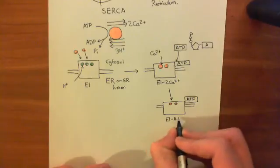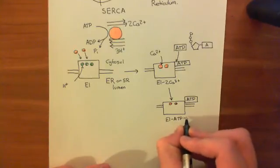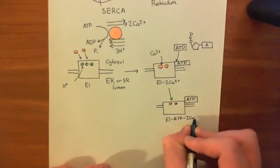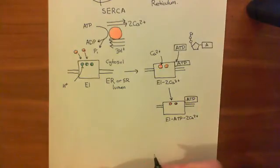And this is now called E1-ATP-2Ca2+. ATP is considered more important than the calcium, so it comes first. This is called the E1-ATP-2Ca2+.